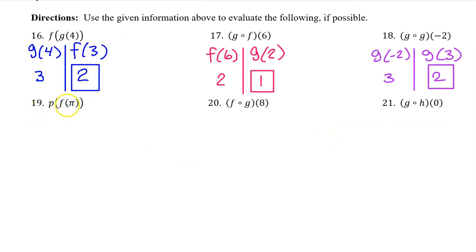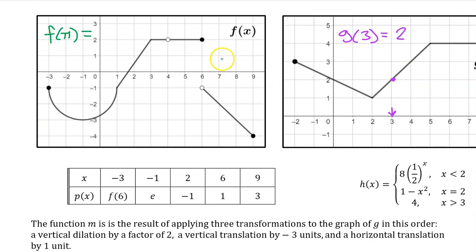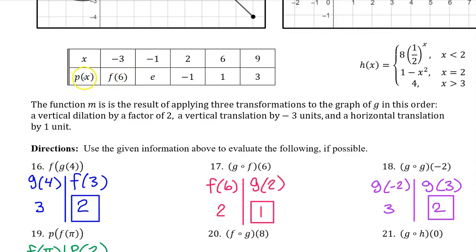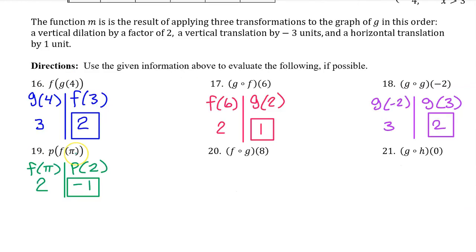Number 19. We work from the inside out, so we begin with F at pi. Here's function F. F at pi is approximately 3.14, so it's going to be right about here. F at pi is 2. Now moving to the outer function P — we need to find P at 2. Here's function P. P at 2 is negative 1. That's all.